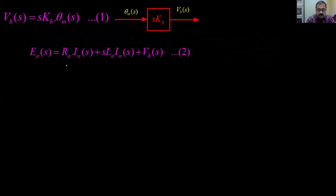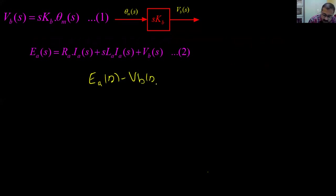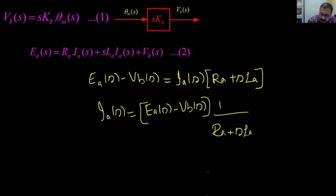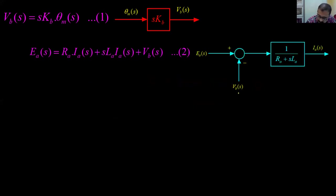From the armature voltage equation: Ea(s) = (Ra + s·La)·Ia(s) + Vb(s). Rearranging: Ia(s) = [Ea(s) − Vb(s)] · 1/(Ra + s·La). So Ea(s) minus Vb(s) is the input to the block with gain 1/(Ra + s·La), giving output Ia(s). The motor torque equation Tm(s) = Kt·Ia(s) is represented as a block with gain Kt and input Ia(s), output Tm(s).